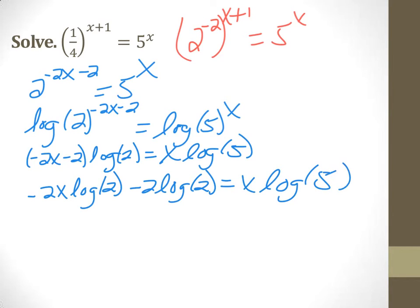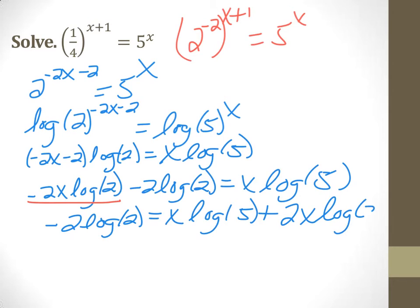So when we're solving for a variable, what we look at is all the variable terms on one side. Let's take this term, which has a variable in it, add it to both sides so that they are all on the right-hand side. So on the left, you keep the negative 2 log of 2. And on the right, you get the x log of 5 plus the 2x log of 2 from the other side.